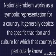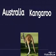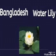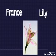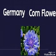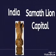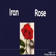Different countries have different national emblems. Australia has the kangaroo as a national emblem. Bangladesh has water lily. Canada has white lily. Denmark has beech. France has lily. Germany has cornflower. India has Sarnath Lion. Iran has rose.